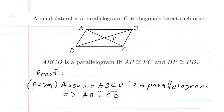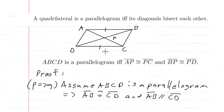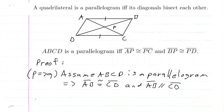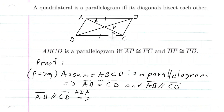We also know that since ABCD is a parallelogram, AB is parallel to CD. Since AB is parallel to CD, by the alternate interior angle theorem, this gives us pairs of congruent alternate interior angles.